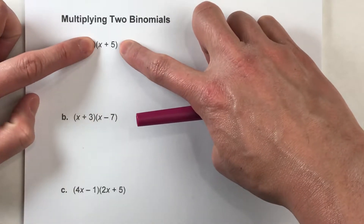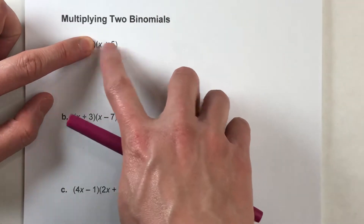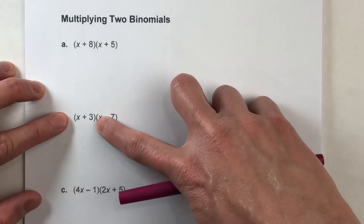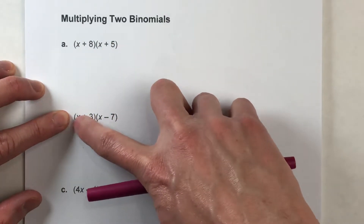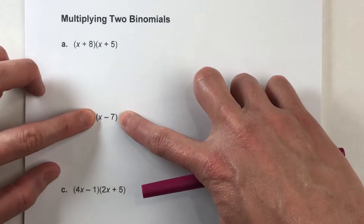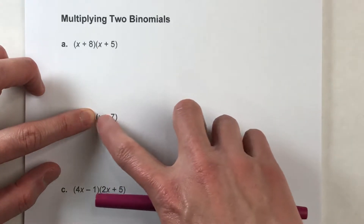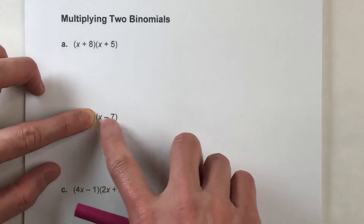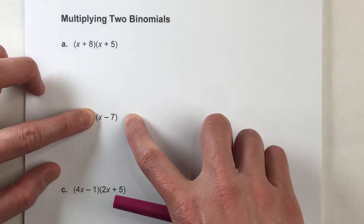Over here, x plus 5 is a binomial because there are two terms being added together. Or down here, x plus 3 — there are two terms being added together. And right here, x minus 7 — two terms, in this case being subtracted. But there are two separate terms in there, so it's a binomial.